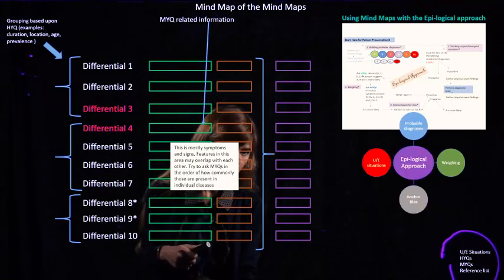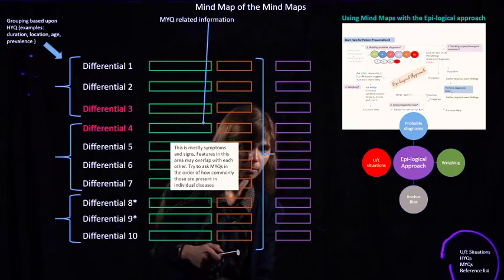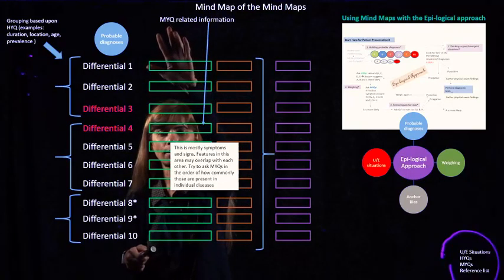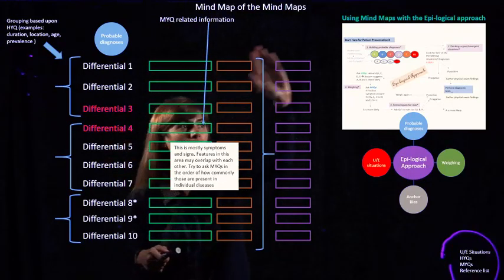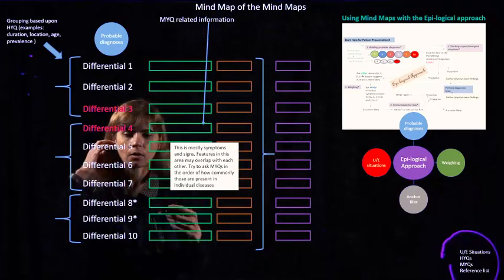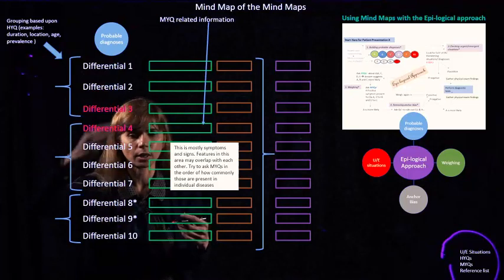This is a generalizable approach, but the mind maps are not generalizable. They are very specific to each patient presentation. How do we incorporate or integrate both of these phenomena? The epilogical approach has four steps. The first step is building a list of probable diagnosis. You can see here that you have a list of differentials, so this is the first step. As soon as we are seeing the patients, we are creating a list of differential diagnosis in our head.